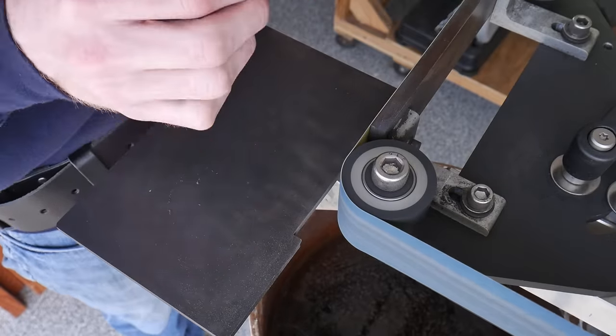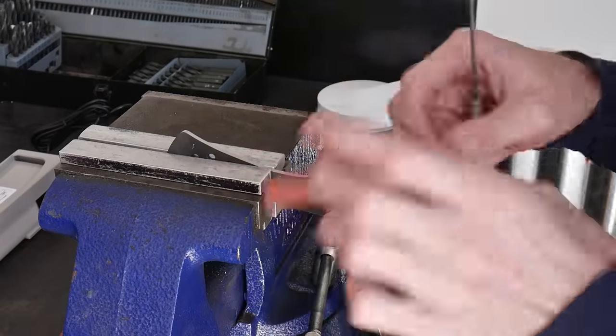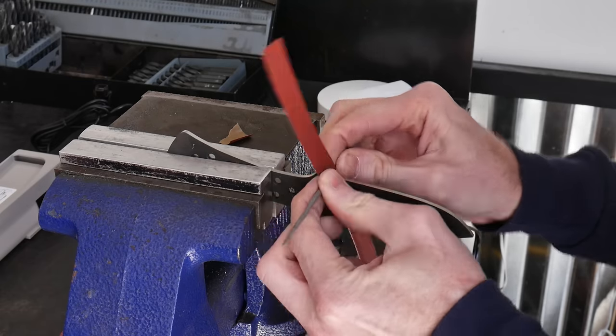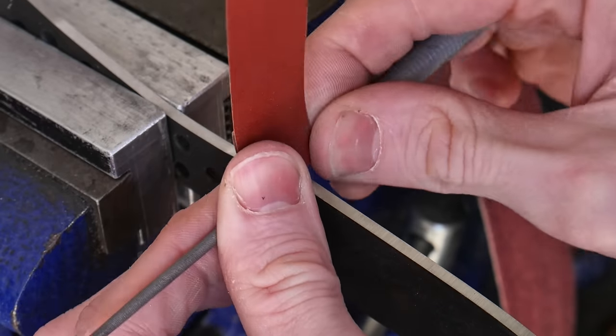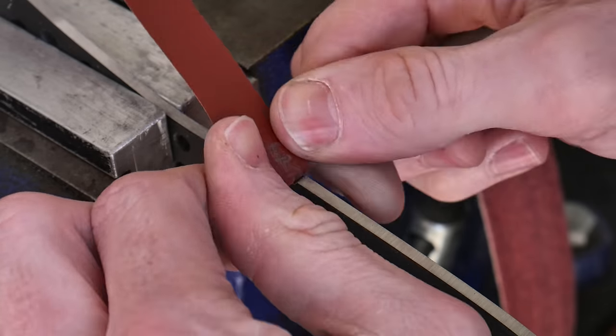The first thing I like to do after heat treating is to get the profile of the knife back up to a 220 grit finish using my grinder in the horizontal position with a work rest. This also ensures that the profile of the blade blank is square to the flats.